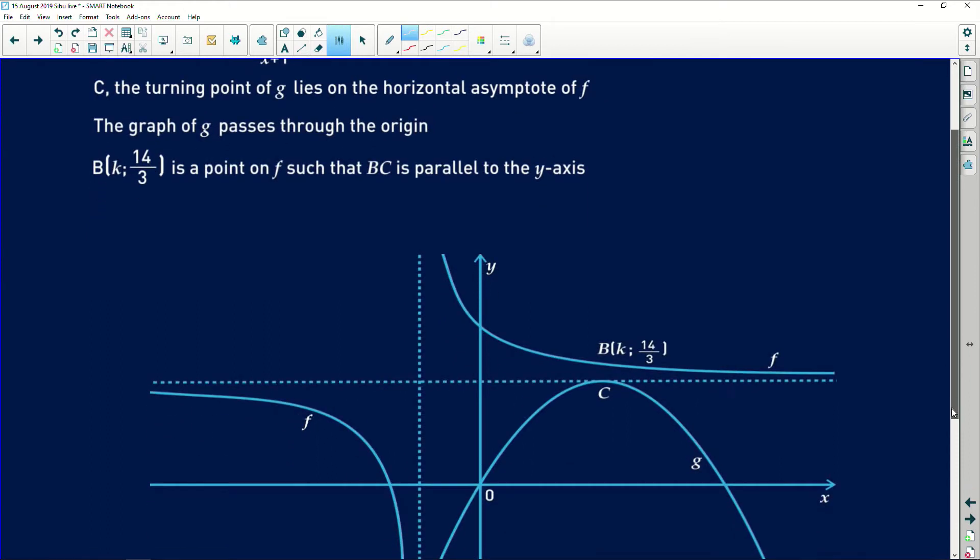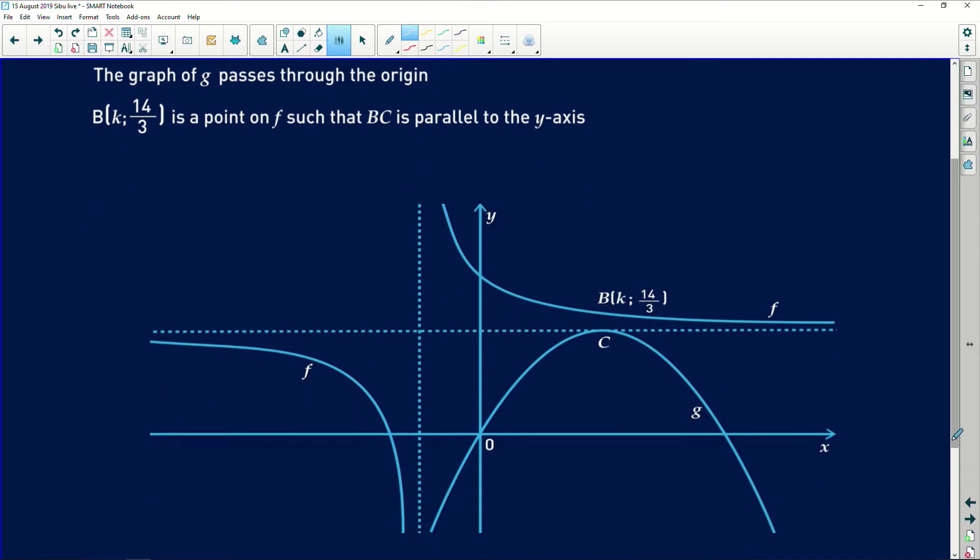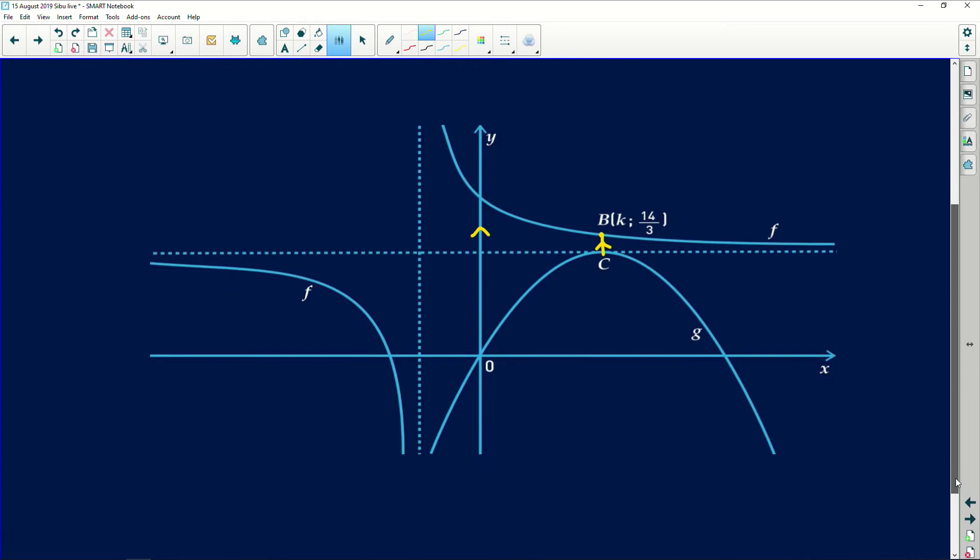So B is a point, k is to 14/3, and on f such that BC is parallel to the y-axis. So there is no line BC here, but if you had to put it, then that line will simply be a line from B to C, and that line will be parallel to the y-axis. And that is a very important piece of information you might need to use in later questions.